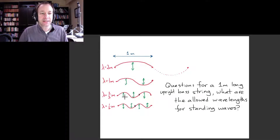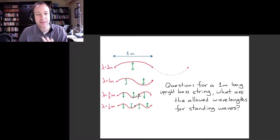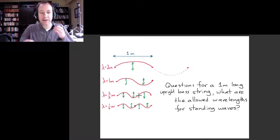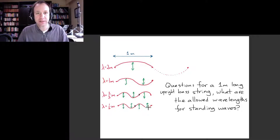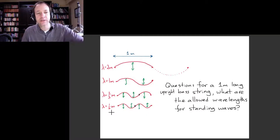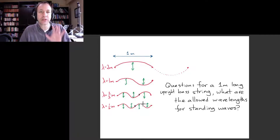In the third case, we ask how far along the string before the pattern repeats. One full wavelength fits in just two-thirds of the string's length, so the wavelength is two-thirds of a meter. In the fourth example, one wavelength covers only half the string — two full wavelengths fit between the ends — so the wavelength is one half of a meter. We could continue this pattern, getting smaller and smaller wavelengths as more nodes appear between the two ends.